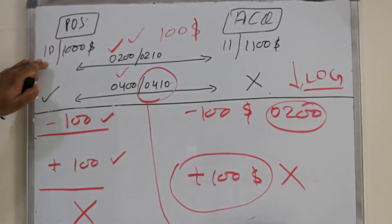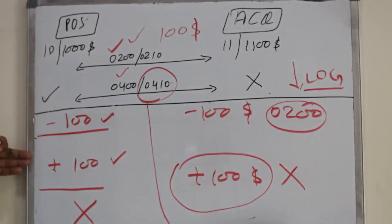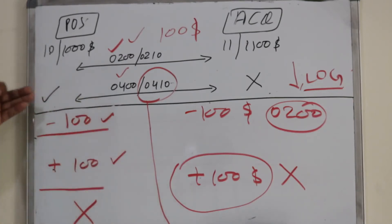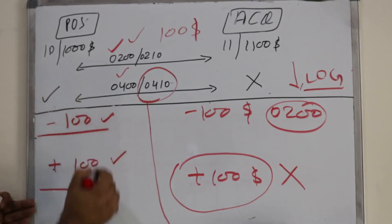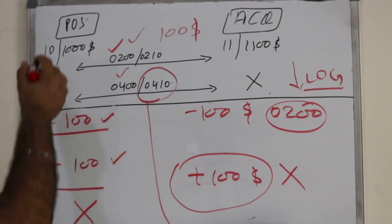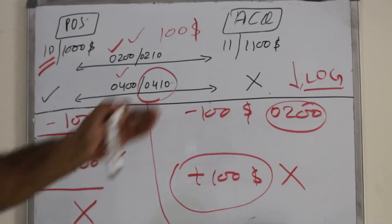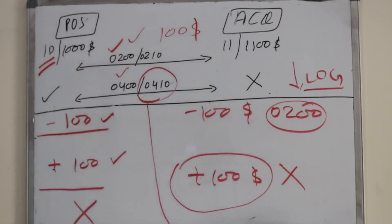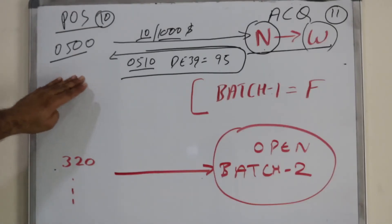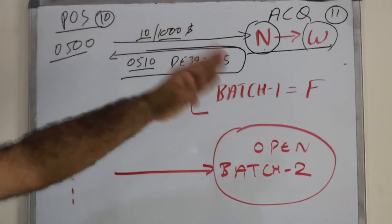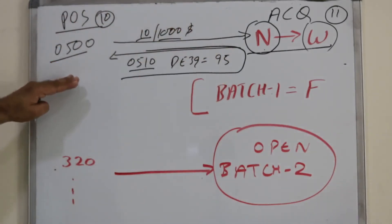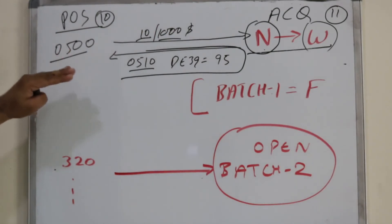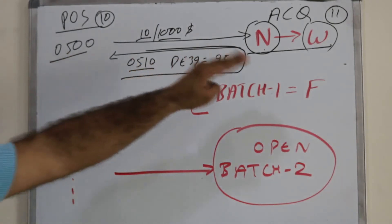There are 10 transactions at the POS because the 11th transaction was sent but nullified. The counter at the POS is still 10, while the counter at the acquiring bank reached 11. When the merchant closes business from the POS machine, the POS device sends a 500 reconciliation message.